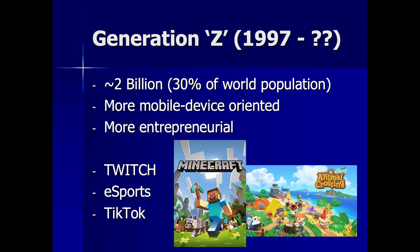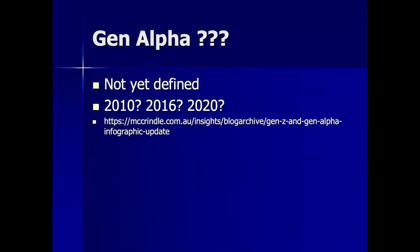These are a lot of generalities, and it does shift as you go from country to country because of different experiences. Gen Z is happening now. The next generation doesn't have a name yet — they're starting to say Generation Alpha. Hopefully we'll come up with a much better name. Gen Alpha is going to be your kids when you start having them.